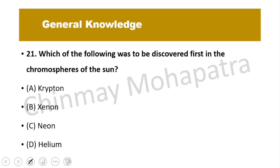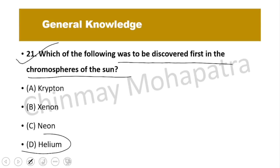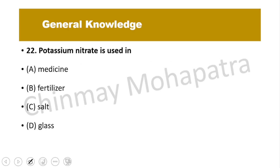Question number 21: Which element was first discovered in the chromosphere of the sun? Helium was first discovered in the chromosphere of the sun. Question number 22: Potassium nitrate is used in what? Potassium nitrate is mainly used in fertilizers.